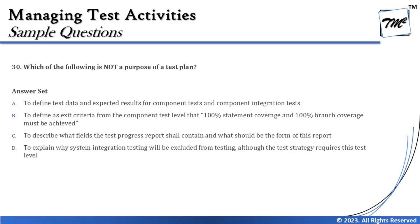Let's cross-check with B, C, and D. Option B says to define the exit criteria from the component test level — that 100% statement coverage and 100% branch coverage must be achieved. Entry and exit criteria are part of the test plan, and the test plan can be for the overall test lifecycle or for a particular level as well. So determining exit or entry criteria for unit testing is not a problem as part of a test plan.